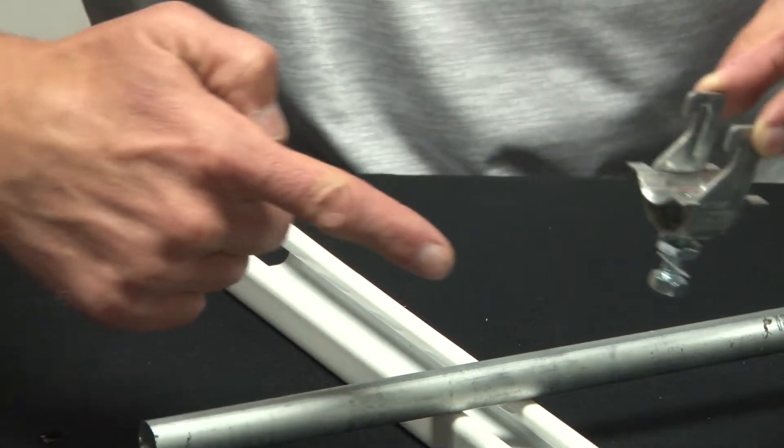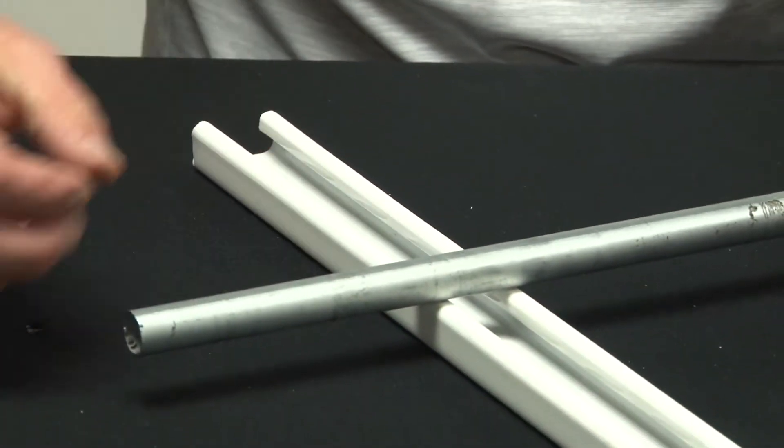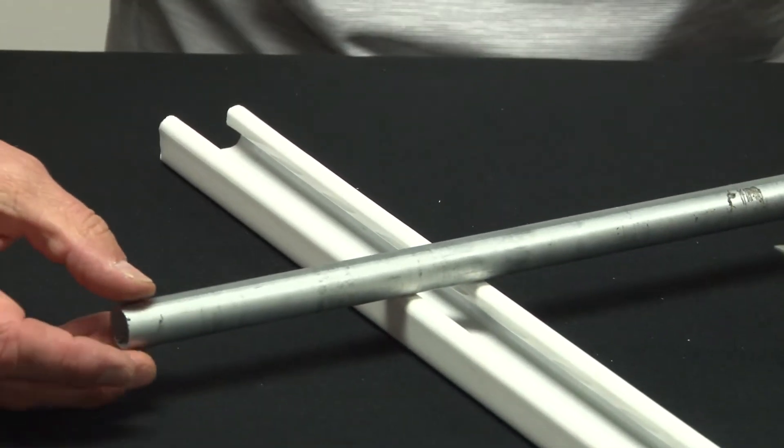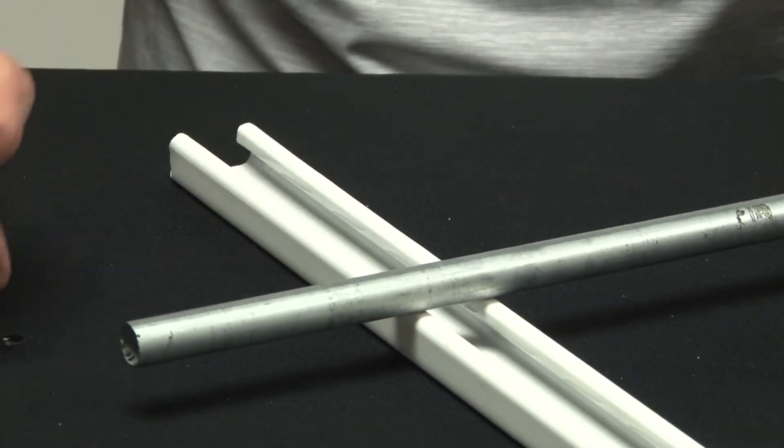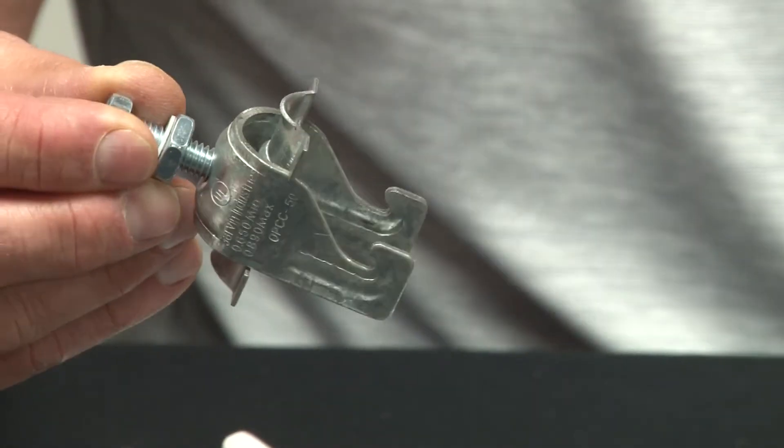As you can see here, I have some unistrut rack and a piece of half inch EMT conduit that would be running across it. The installation is quite easy.